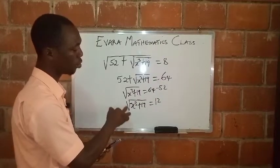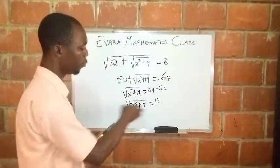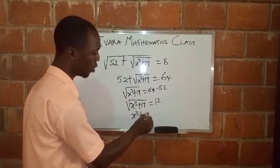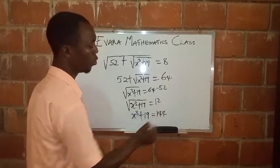So in order to get rid of this square root again, we square both sides. If we square both sides, we are left with x cubed plus 19 here. And if we square 12, that will give you 144.